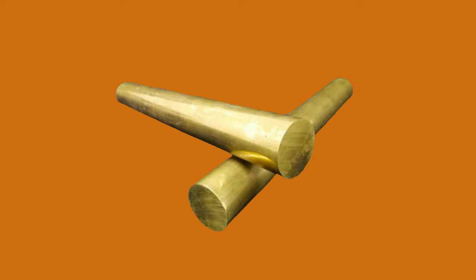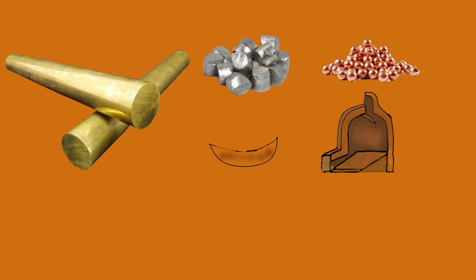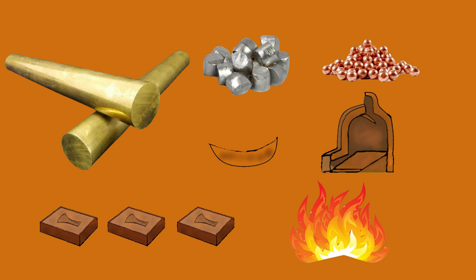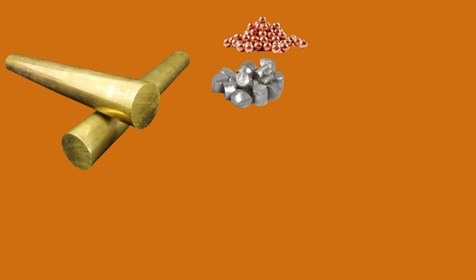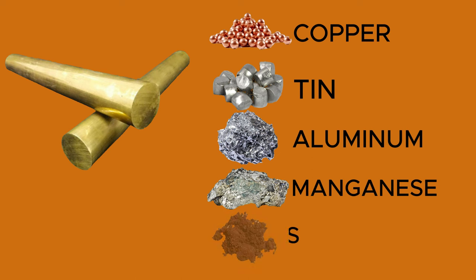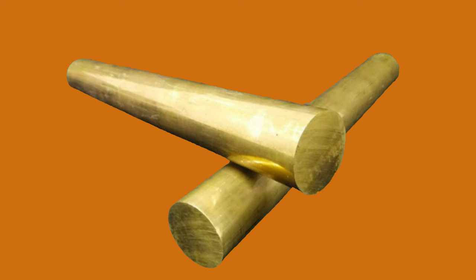The specific details of the bronze-making process can vary depending on the alloy's intended use, the type of equipment used, and the scale of production. Bronze alloys with different compositions may require adjustments to melting temperatures and other processing parameters. Bronze is a metal alloy primarily composed of copper, along with varying proportions of tin and sometimes other elements such as aluminum, manganese, or phosphorus. The exact composition can vary depending on its intended use, with different ratios of copper and tin producing alloys with distinct properties.